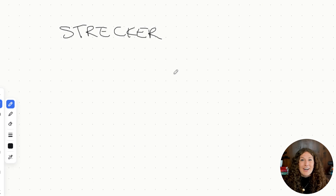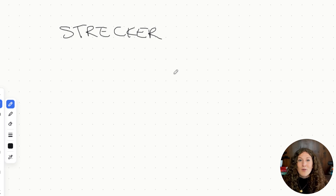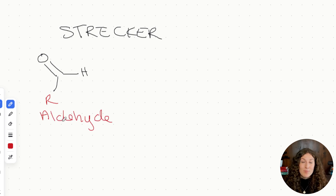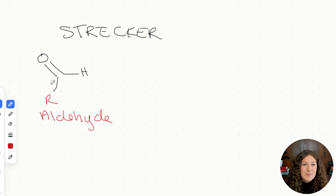Now let's get into the key features of each reaction and what you need to know for test day. We're going to start with Strecker. Before I draw out this mechanism, I want to emphasize that mechanisms are not tested on the MCAT. Instead, as I draw this out, I'm going to point out key features I do want you to remember — things like reactants, products, and where we form either the L or D isomer.